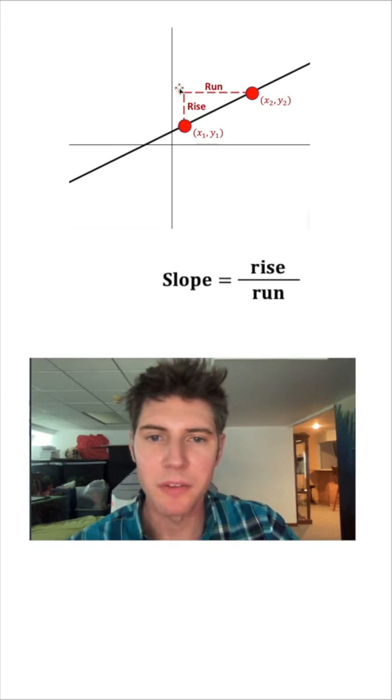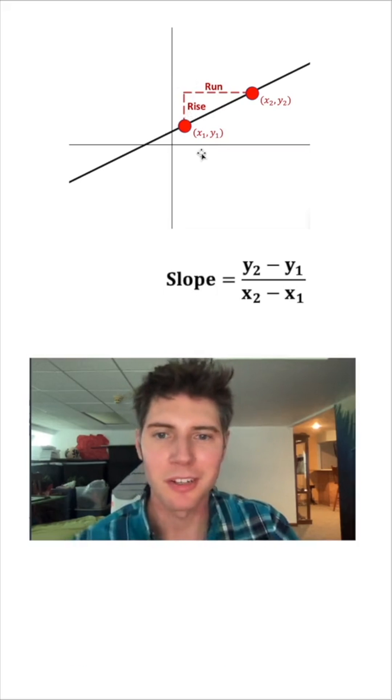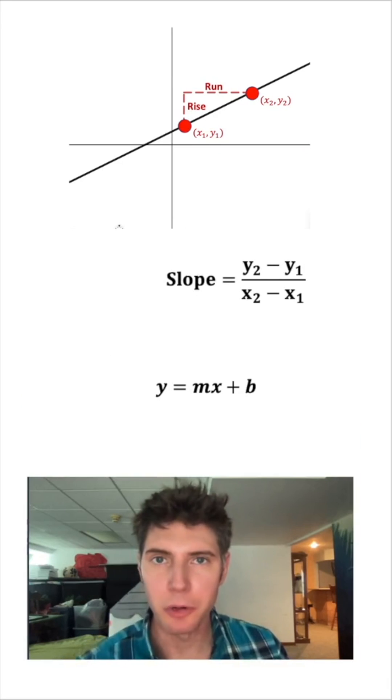This rise is whatever the height of this point is minus the height of this point. That's y2 minus y1. And this run is however far over this point is minus however far this point is. So that's x2 minus x1. This is the equation of a line y equals mx plus b. This is a great way to work with lines.